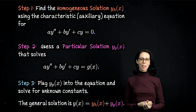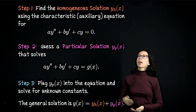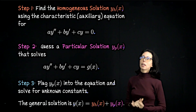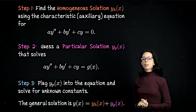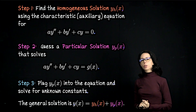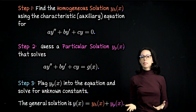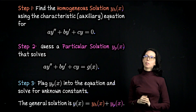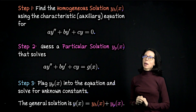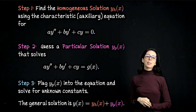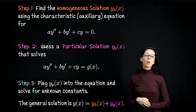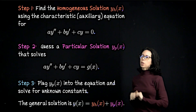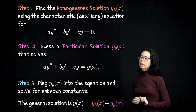That's what we've been doing recently. Out of step one, you get what I will call the homogeneous solution, denoted y sub h. Sometimes in other sources you might see it denoted y sub c for complementary — that's just a different notation. I will use y sub h to mean the solution to the homogeneous problem. Step two is really the method.